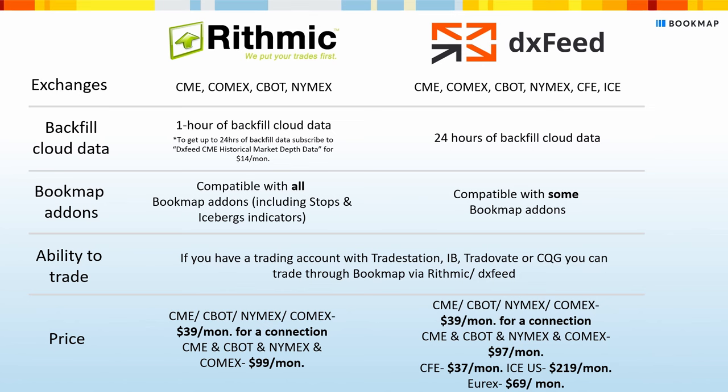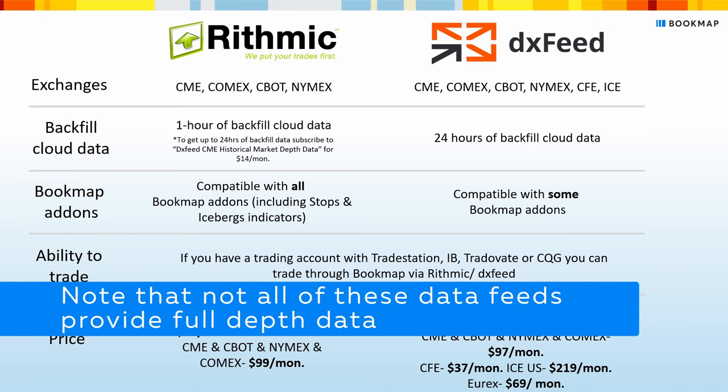For DXFeed's additional exchanges: CFE is $37 per month, ICUS is $219 per month, and EUREX is $69 per month. Bookmap connects to several more data providers. If your broker supports one of those platforms, you can get credentials from your broker and use Bookmap to visualize the market data and trade. If your broker doesn't support those platforms, you can subscribe directly to the data provider for data only. Some examples of other compatible data providers are CQG, Tradeovate, Gain, and NinjaTrader. Please check the complete list in the description.